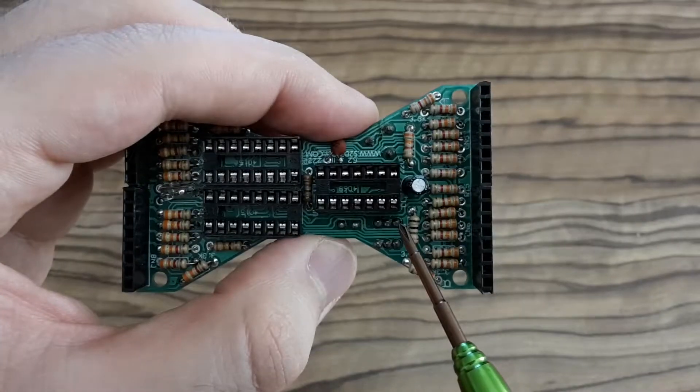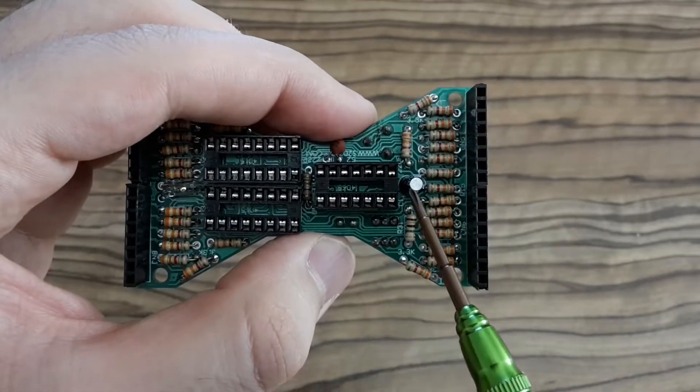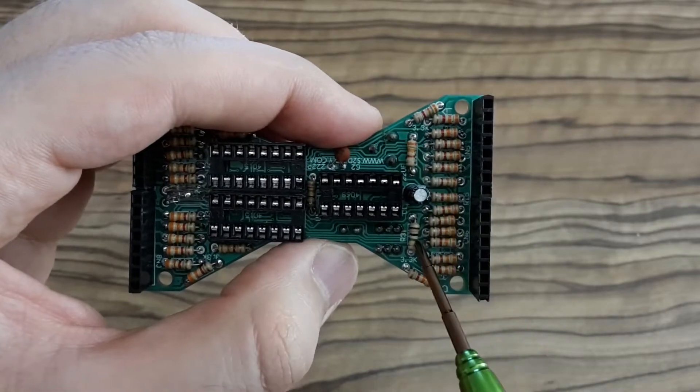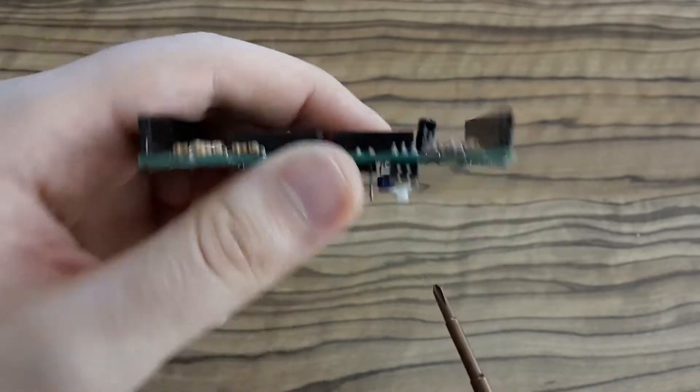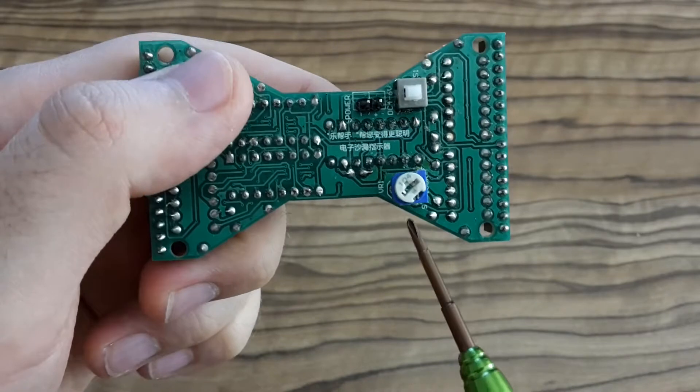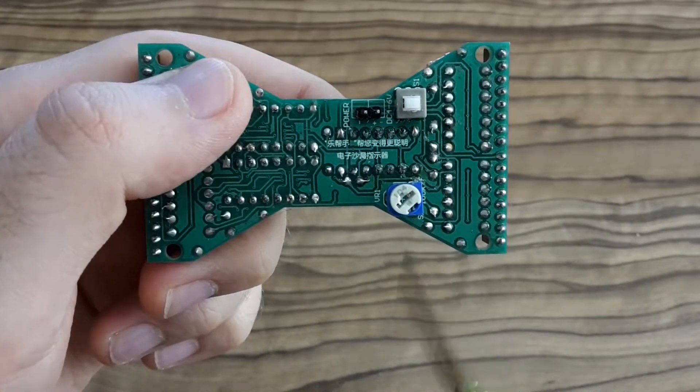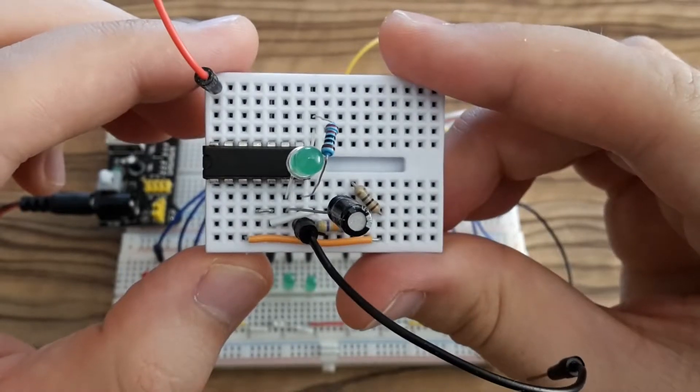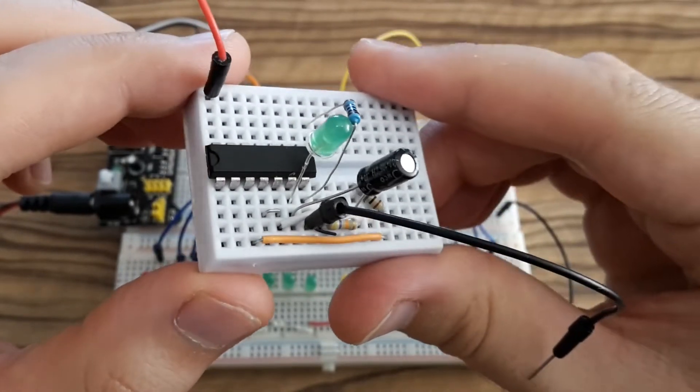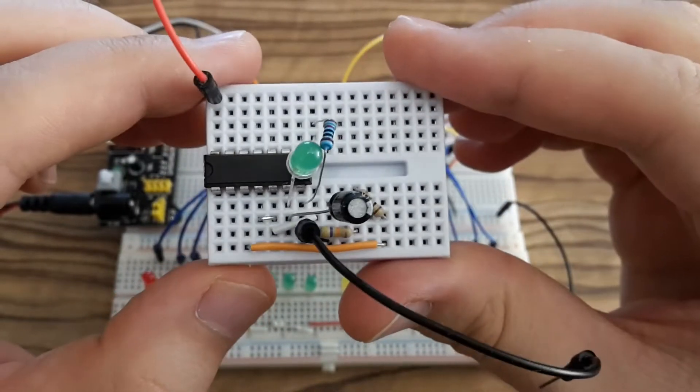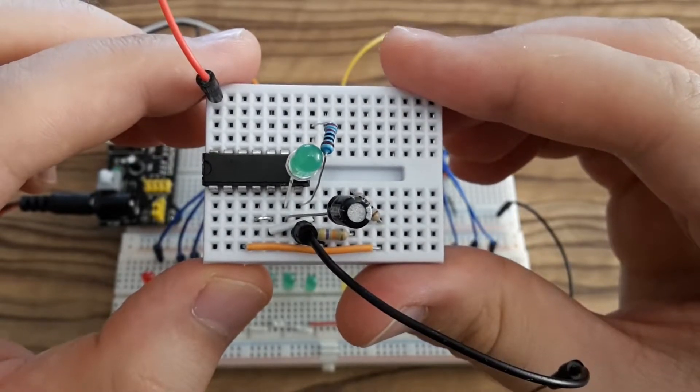The hex inverter is placed in the socket and together with this electrolytic capacitor and these two resistors. And this trimmer on the opposite side is responsible for generating clock signal. This is that clock generator. I know it's a little messy.